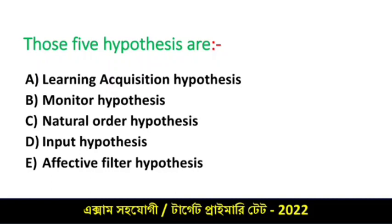1. Learning Acquisition Hypothesis. 2. Monitor Hypothesis. 3. Natural Order Hypothesis. 4. Input Hypothesis. 5. Affective Filter Hypothesis. These are the 5 Hypotheses which were introduced by Stephen Krashen.